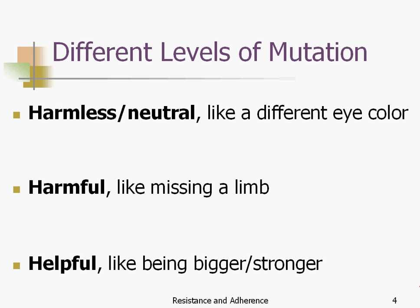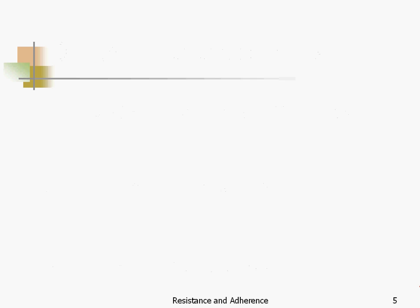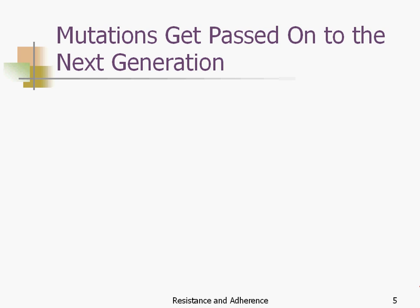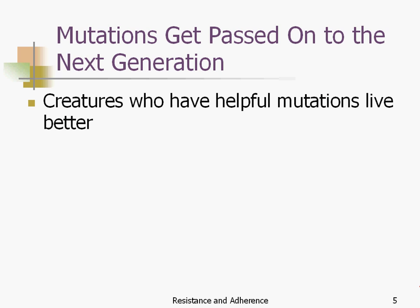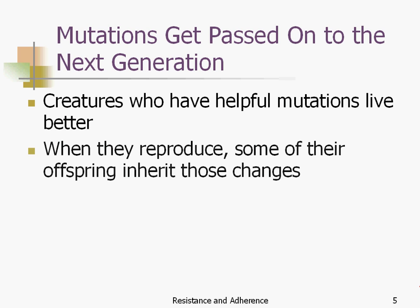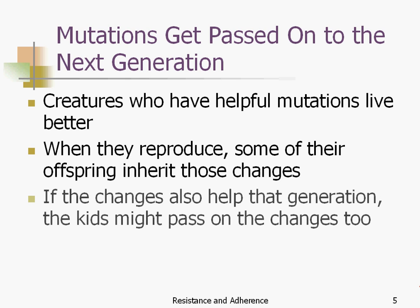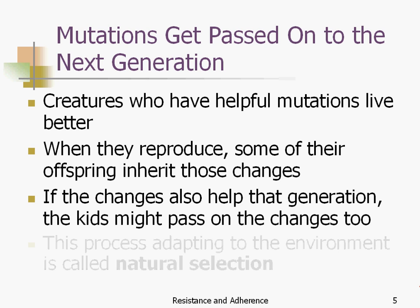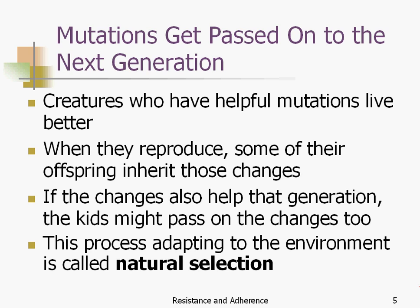Some mutations are helpful, like being bigger or stronger. All of these are different changes that a new creature can have that makes it different from its parents and impacts the way it lives in the world. Mutations get passed on to the next generation, particularly if they're helpful. Creatures with helpful mutations live better, and when they reproduce, offspring inherit those changes. They're less likely to pass on harmful mutations. This process of adapting to the environment is called natural selection, and it happens every day.